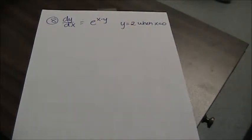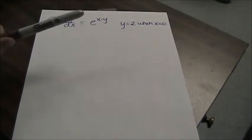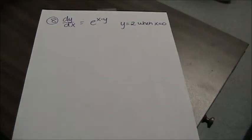Alright, last one – we are solving this differential equation given the initial condition. It's dy over dx equals e to the x minus y, y equals 2 and x equals 0.